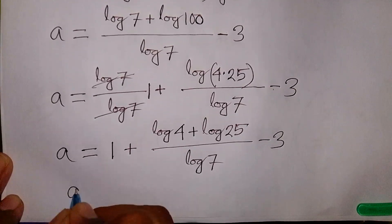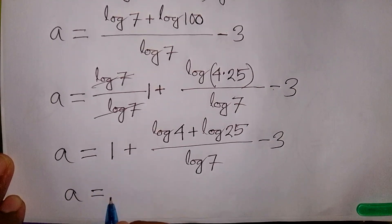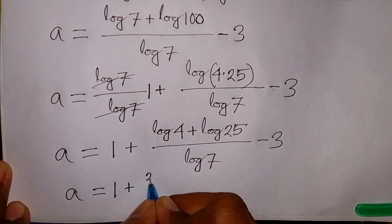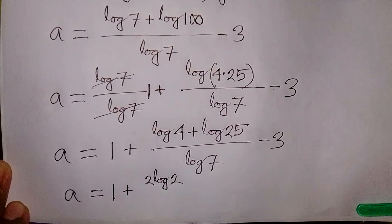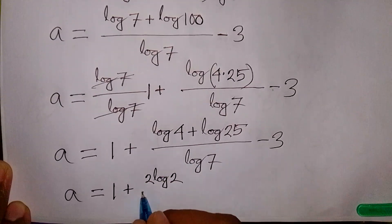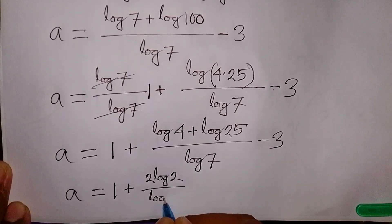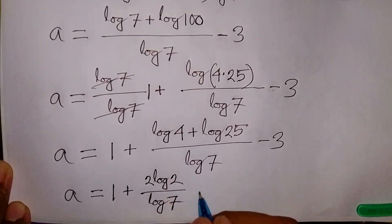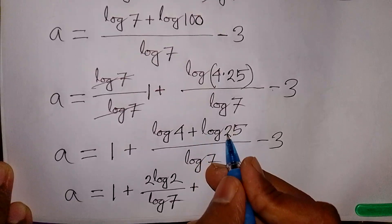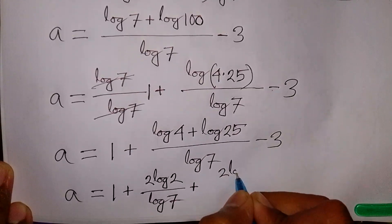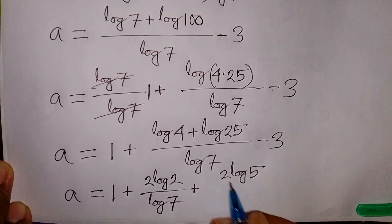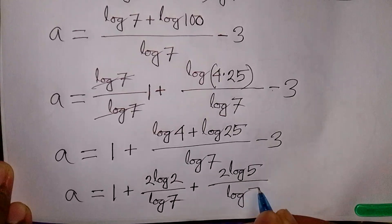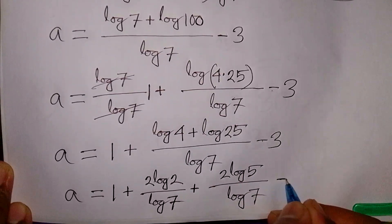In the next step, we expand: a equals 1 plus log 4 over log 7, plus log 25 over log 7, minus 3. Here, log 4 is the same as 2 log 2, and log 25 is the same as 2 log 5.